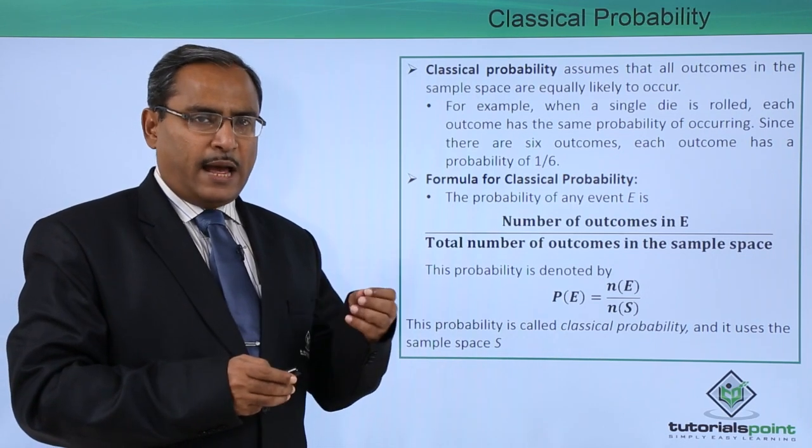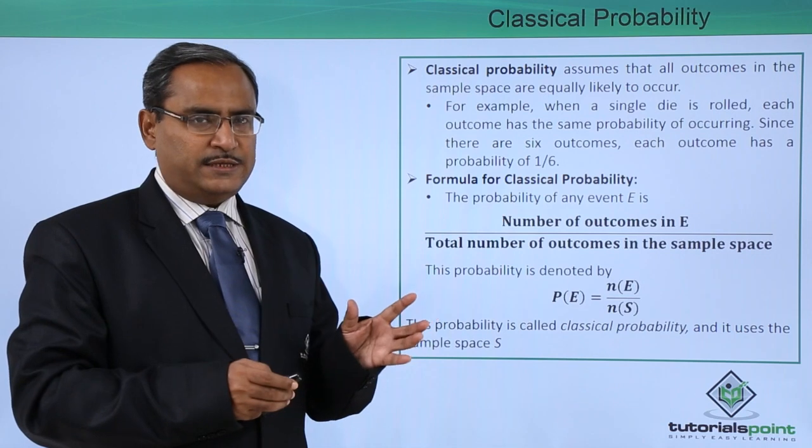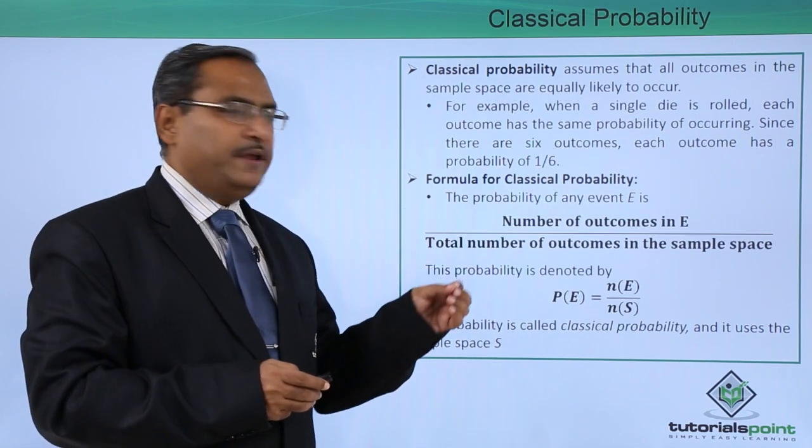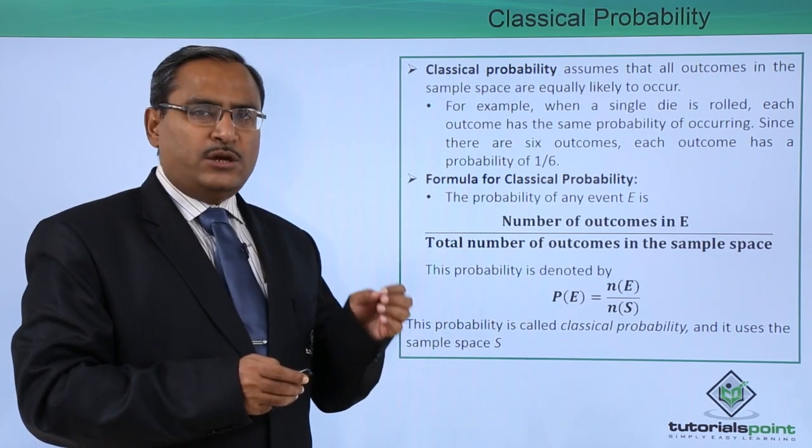The die can have 6 different values: 1, 2, 3, 4, 5, 6. Here each and every outcome is equally probable.